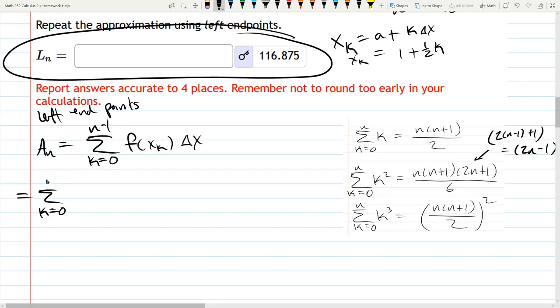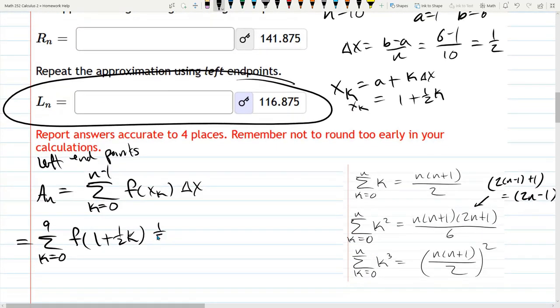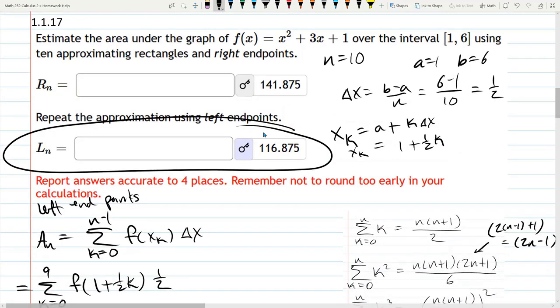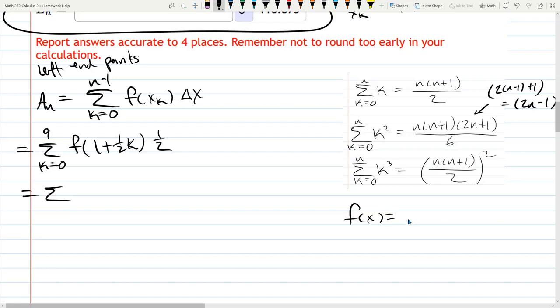Starting at 0, N minus 1 is 10 minus 1, and that's 9. We are F'ing 1 plus 1 half K, and delta X is 1 half. You could bring the 1 half outside right now, outside the summation, but let's go ahead and F the 1 plus 1 half K first. Let's rewrite F of X is X squared plus 3X plus 1. This might be one of the more difficult parts of this problem.